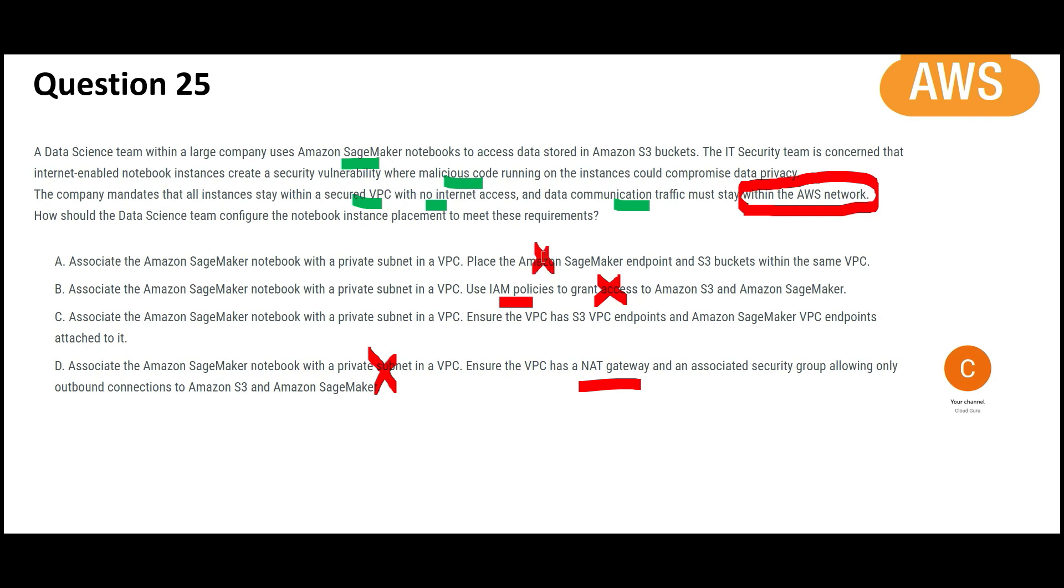And A is saying they will place SageMaker endpoint and S3 buckets within the same VPC. No. Today you have to do this. But tomorrow, you also want to talk with maybe AWS Redshift. Then what will you do? Will you keep on adding everything to a VPC? No.